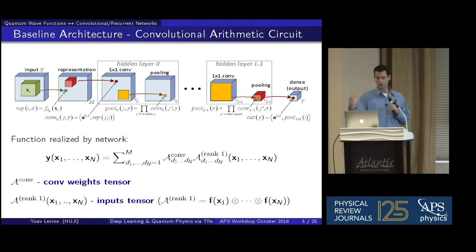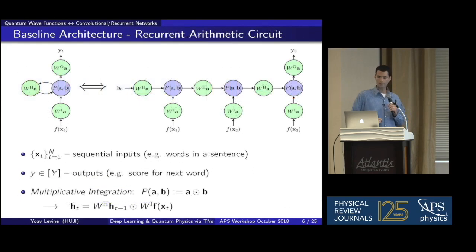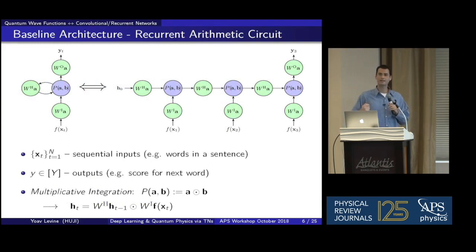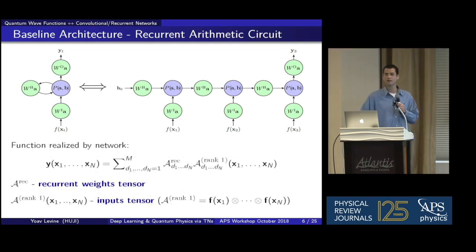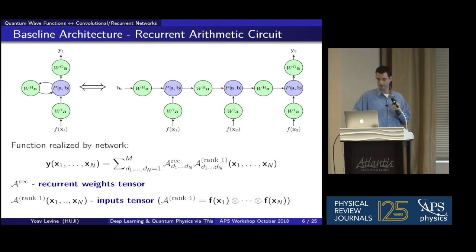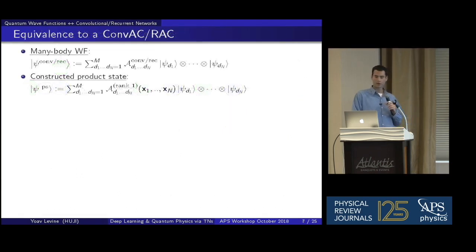Similarly, we analyze the recurrent network. A recurrent network integrates incoming data with a hidden state that summarizes what the network has seen so far — for example, words in a sentence — and tries to predict the most probable next word. Again, with multiplication as the non-linearity, we can write the function realized by this recurrent network as an inner product between two tensors: a recurrent weights tensor holding all information regarding network computation, and a rank-one tensor related to the inputs formed by an outer product.